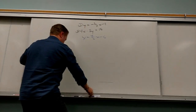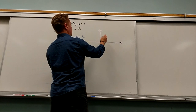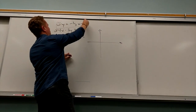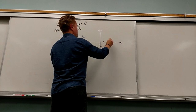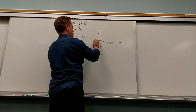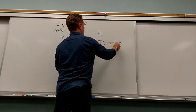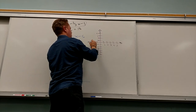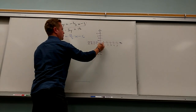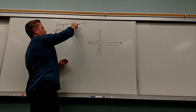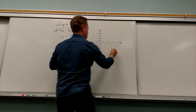So what do you know about this first one? Where does it start? The first one starts at negative one. So it starts at zero, negative one, and it goes down one, over three. So down one, over three. Down one, over three.